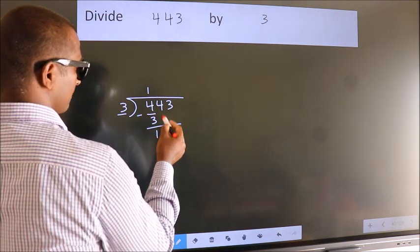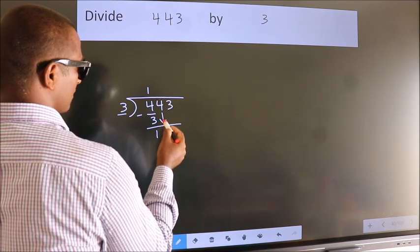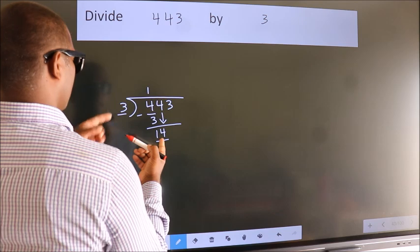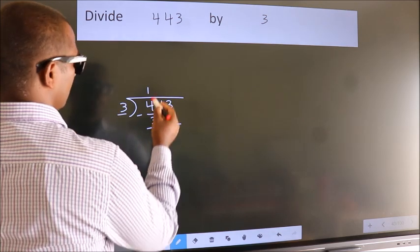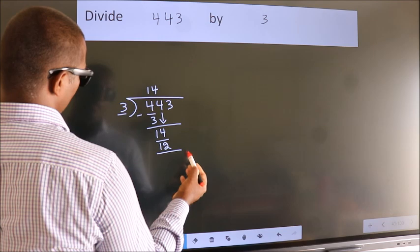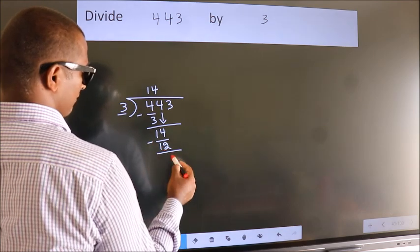After this, bring down the next number. So, 4 down. So, 14. A number close to 14 in the 3 table is 3 times 4 is 12. Now, we subtract. We get 2.